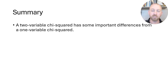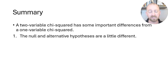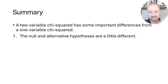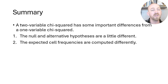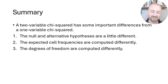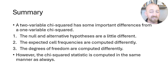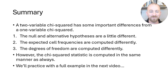To recap, a two-variable chi-squared has some important differences from the one-variable chi-squared. The null and alternative hypotheses are a little different — you have to address one entire level of one variable and explain that it doesn't affect any level of the other variable. The expected cell frequencies are computed differently using that column-total times row-total divided by overall-total equation. The degrees of freedom are also computed differently. The good news is that the chi-squared statistic itself is computed in exactly the same way as for the one-variable chi-squared analysis. I'll show you how to do that in the next video.